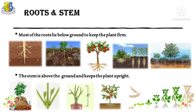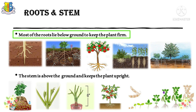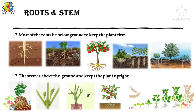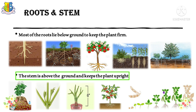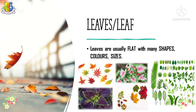Roots and stem. Most of the roots lie below ground to keep the plant firm. The stem is above the ground and keeps the plant upright.